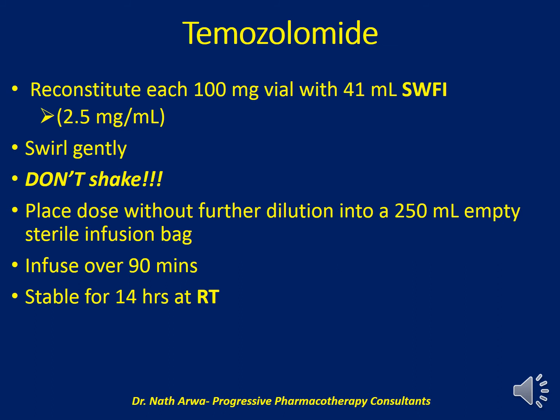Temozolomide: we should reconstitute each 100 mg vial using 41 ml of sterile water for injection to obtain a concentration of 2.5 mg per ml. After adding the sterile water, swirl gently — do not shake, otherwise you'll end up with foaming. Place the dose without further dilution into a 250 ml empty sterile infusion bag, then infuse the solution over 90 minutes. Such a solution is stable for 14 hours at room temperature.